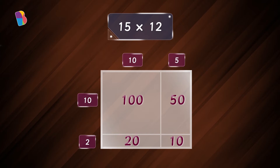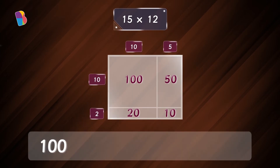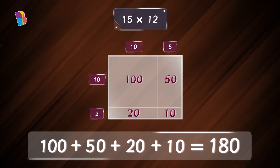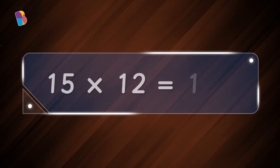To find the final product, we have to find the total area of the rectangle with length fifteen and width twelve. This means we need to add one hundred, fifty, twenty, and ten. One hundred plus fifty plus twenty plus ten gives one hundred and eighty. So, fifteen times twelve is one hundred eighty.